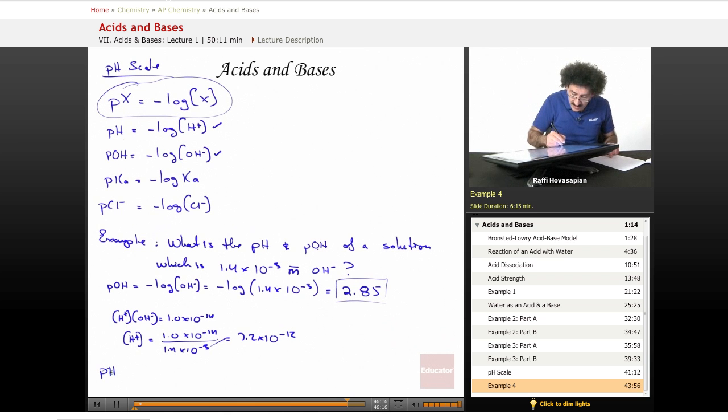And then when I take the pH of that, that's going to be the negative log of the H concentration. Negative log of 7.2 times 10 to the negative 12 equals 11.14. 11.14 pH, 2.85 pOH.